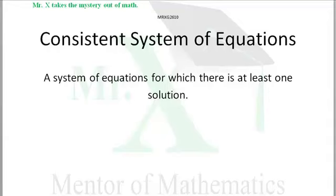Some systems of equations do not have a solution — they're inconsistent. But if there is at least one solution, then the system is consistent.